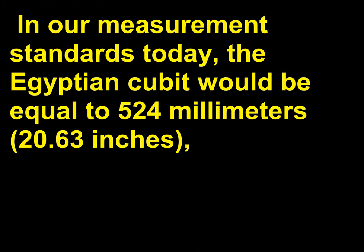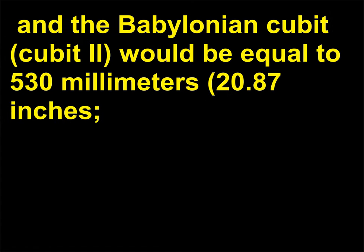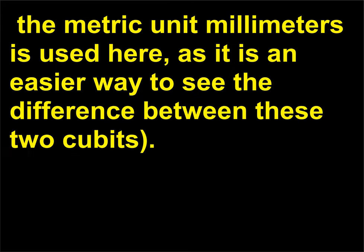This was maintained on a black granite rod accessible to all, enabling the citizenry to make their own measuring rods fit the royal standard. The Egyptian cubit was not the only one. By 1700 BCE the Babylonians had changed the measurement of a cubit, making it slightly longer. In our measurement standards today, the Egyptian cubit would be equal to 524 mm, or 20.63 inches.